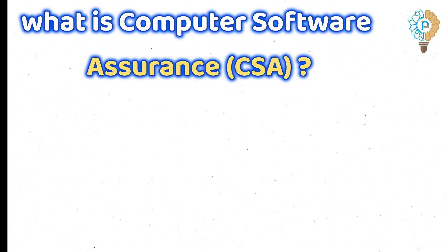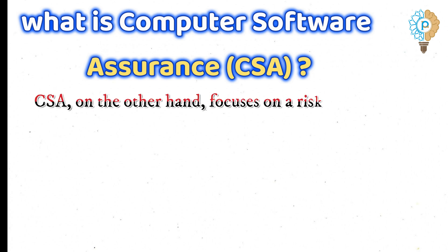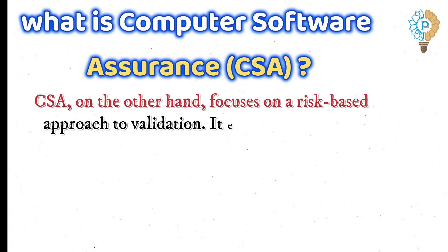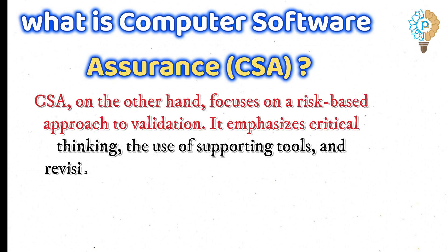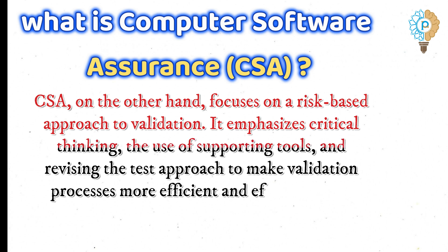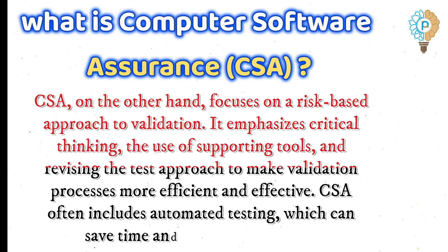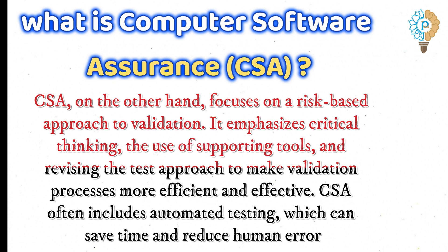What is computer software assurance (CSA)? CSA, on the other hand, focuses on a risk-based approach to validation. It emphasizes critical thinking, the use of supporting tools, and revising the test approach to make validation processes more efficient and effective. CSA often includes automated testing, which can save time and reduce human error.